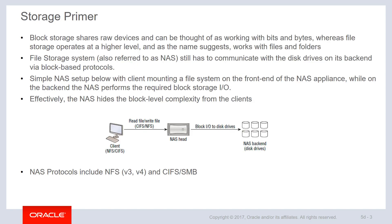As a quick storage primer, it's important to note that block storage shares raw devices and can be thought of as working with bits and bytes, whereas file storage operates at a higher level and works with files and folders. The file storage system, also referred to as NAS, or network-attached storage, still has to communicate with the disk drives on its backend via block-based protocols. Some simple NAS setups use the client to mount a file system on the front-end, and on the backend, the NAS performs the required block-level storage input-output transactions. Effectively, the NAS device hides the block-level complexity from the clients.